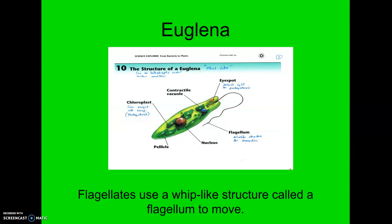Euglena is kind of a mix. It has a flagellum so it actually moves like a protozoan, but interestingly it has chloroplasts and has the ability to make its own food. They can also be heterotrophs if there's no food available — they can eat as well. So they can behave kind of like a plant and kind of like an animal. It's kind of hard to classify whether they're an algae or a protozoan, but they are flagellates — meaning they have a flagellum.